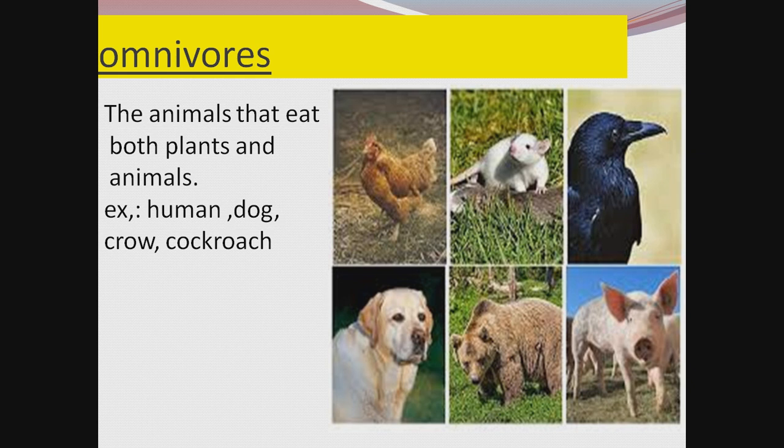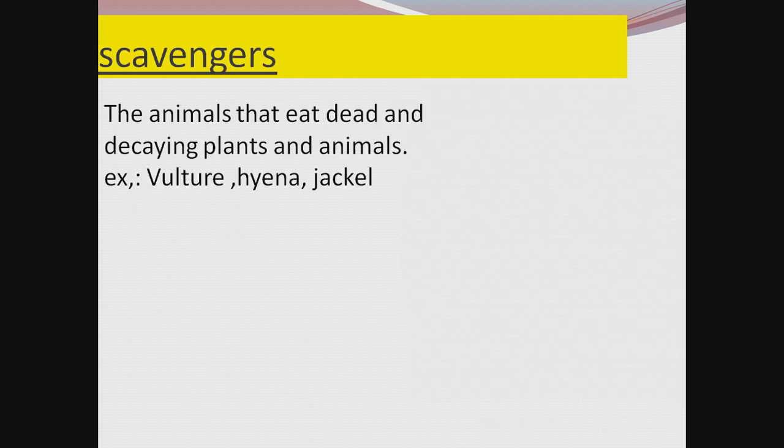The animals that eat both plants and animals are called as omnivores. Examples of omnivores, as you can see in the picture, are human beings, dog, crow, and cockroach. A hen can eat grains and also eat worms. Crow eats food items like rice and can also eat the flesh of other animals like rat. Dog eats both rice and meat. Bear also eats everything. These are categorized under omnivores.